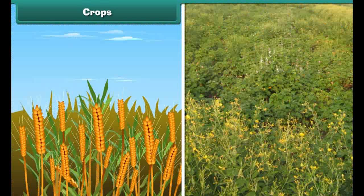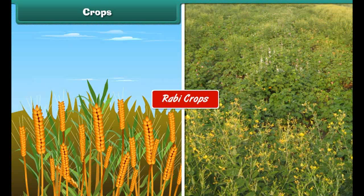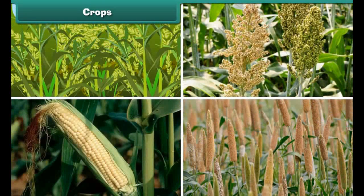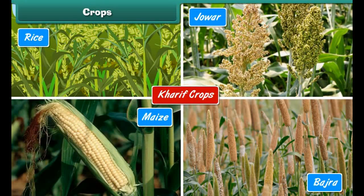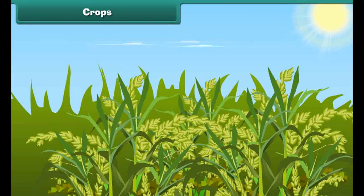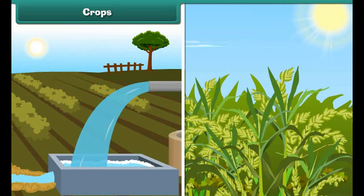The crops which are grown in winter season are called rabi crops — for example, wheat and gram. The crops which are grown in summer are called kharif crops — for example, rice, jowar, maize, and bajra. Different types of crops require different amounts of sunlight, water, air, and type of soil.